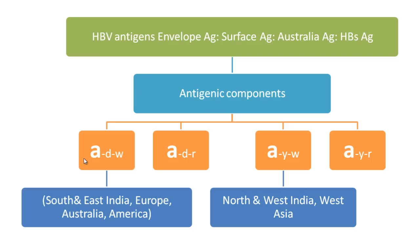The ADW type of hepatitis B surface antigen is common in the southern and eastern portions of India, as well as in Europe, Australia, and America. The AYW type is very common in the northern and western parts of India as well as in the West Asian region.